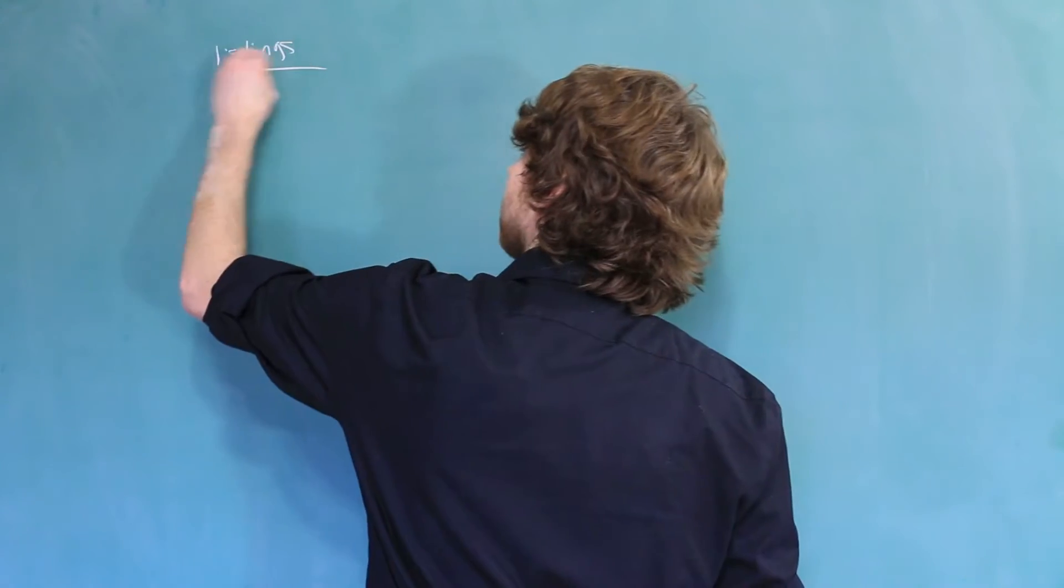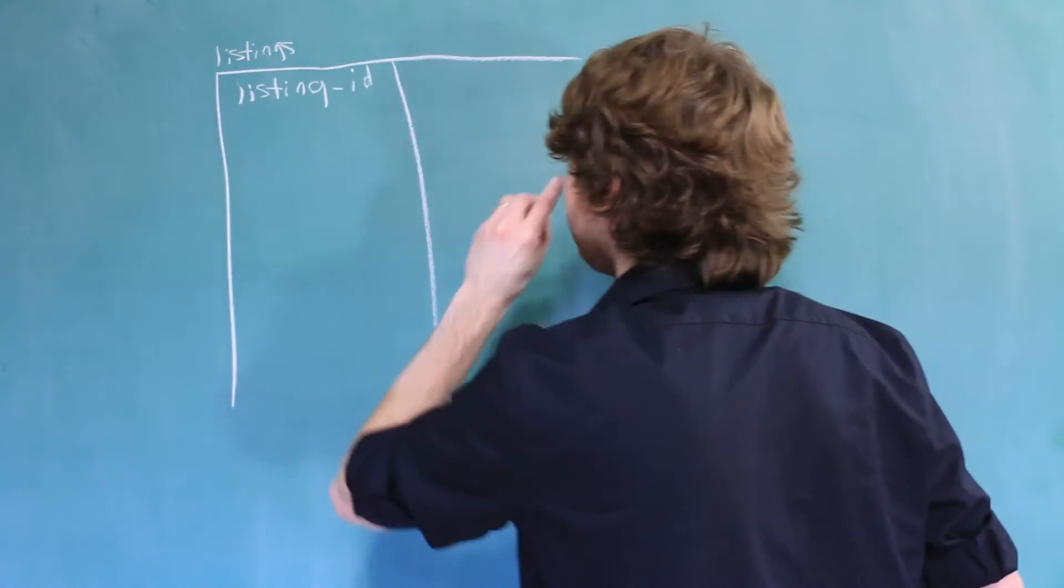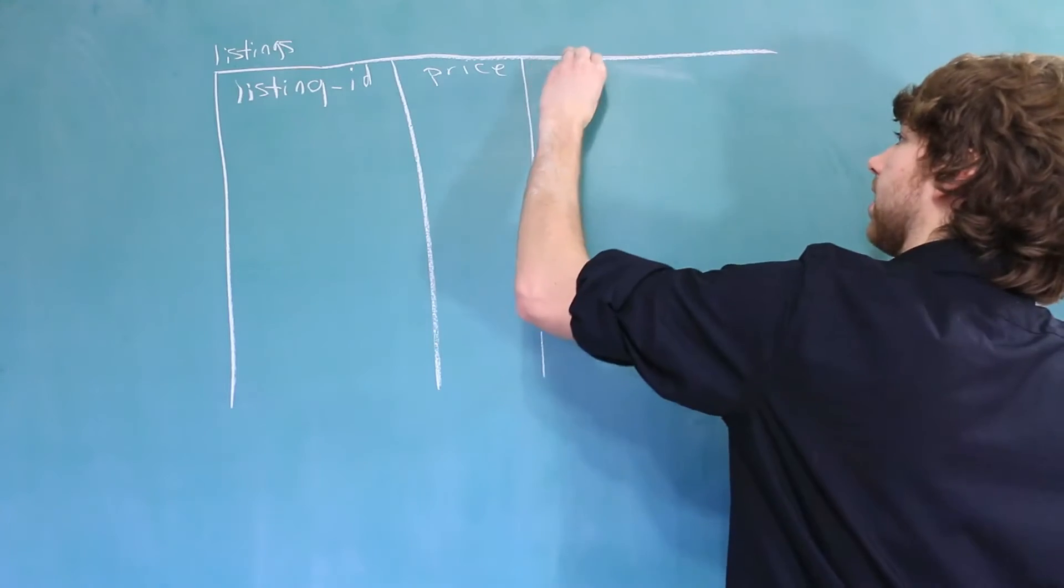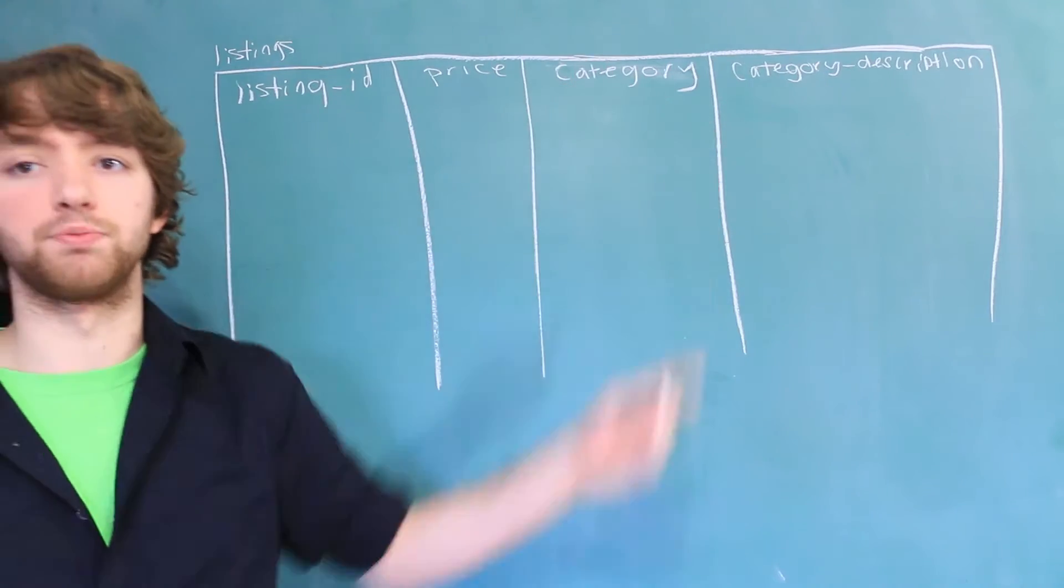But essentially when you have a column, that column depends on the primary key. So on our bidding selling website, let's say we have a listings table. And inside of this table we are going to have the primary key of listing ID. We'll also have some other data. We might have a price and a category. And we'll also say what that category is about. So we have a category description.